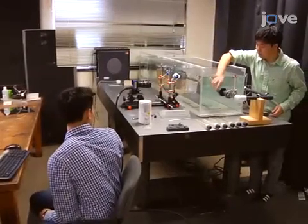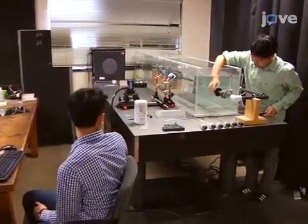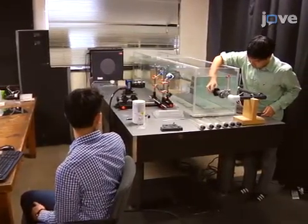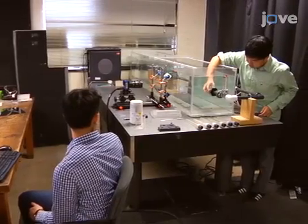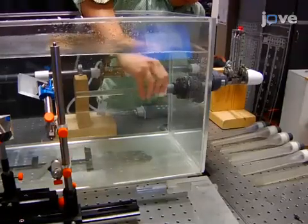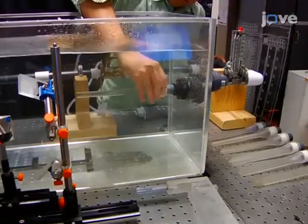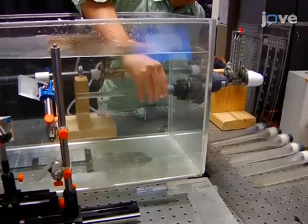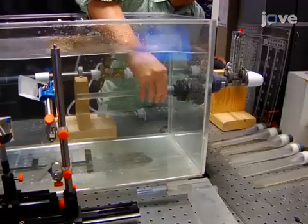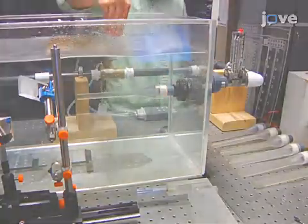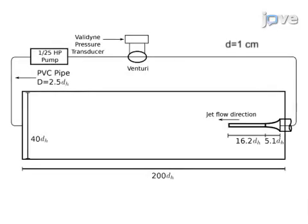The setup for this experiment is for the study of the intermediate flow field of a pipe jet. This water-filled tank has within it a flume to create a jet with a diameter of one centimeter. This schematic provides an overview of the setup before the addition of equipment for three-dimensional particle tracking velocimetry.